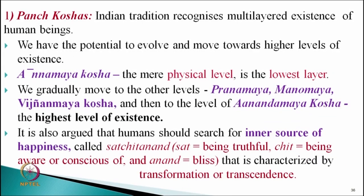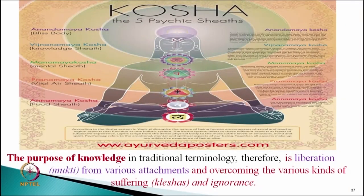If we go through all these layers, the ultimate level is anandamayakosha, and if we touch our anandamayakosha, then we have satchidanand. It is argued that humans should search for the inner source of happiness — satchidanand — where sat means being or truth, chit means consciousness or awareness, and anand means bliss. That is our characterization by transformation and transcendence. For transcendence, we should reach the level of satchidanand or anandamayakosha — our ultimate level. This is our first model describing happiness, connected with the inner self and consciousness.